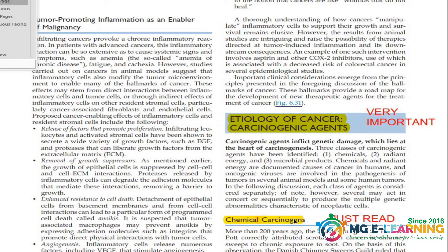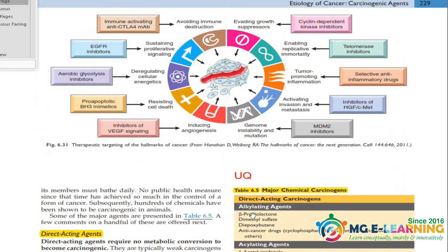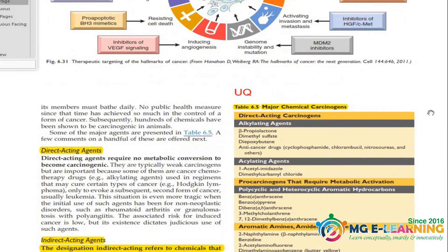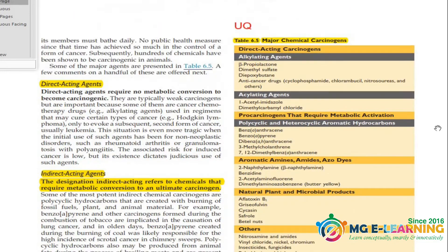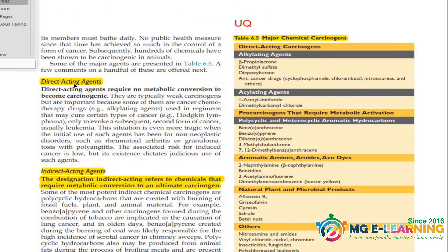Chemical carcinogenic agents — just read through this. There is a UQ Table 6.5 which lists major chemical carcinogens — direct acting and indirect acting. This whole table is UQ, so you have to do it.